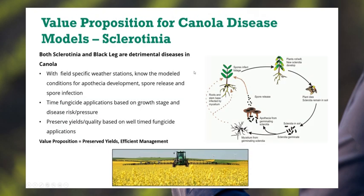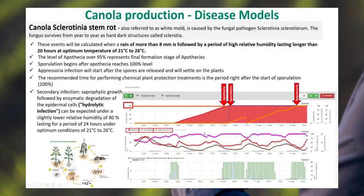There is a value proposition for the canola disease model, in particular sclerotinia. If you have field-specific weather stations, you can know the modeled conditions for apothecia development, spore release, and spore infections — both hydrolytic and apothecia. You can then time your fungicide application to the right growth stage. You need to know the synchrony of the crop to the disease, as well as the stage of development, and track the disease risk pressure. The result is preserved yields and efficient management with the system.